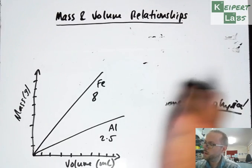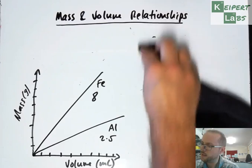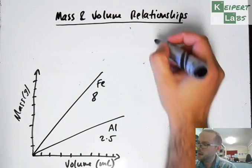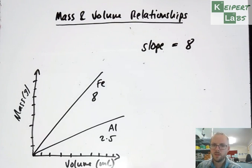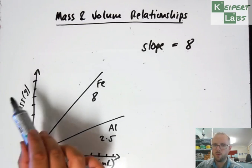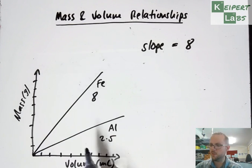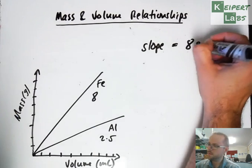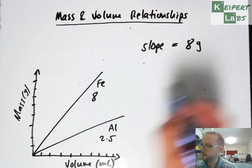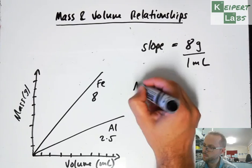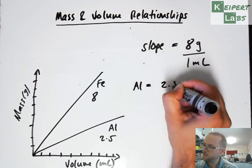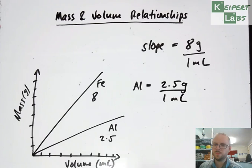If we look at the slope and the units of that slope, for our iron our slope was 8, but if we look at combining the units of our y-axis over our x-axis because we did rise over run, we did units of grams. So I have 8 grams for every 1 milliliter. And likewise, if I look at aluminum, I'd have 2.5 grams for every 1 milliliter. So what that means, if I say it as a sentence, is that for every 8 grams of iron I have 1 milliliter of volume. For every 2.5 grams of aluminum I have 1 milliliter of volume.